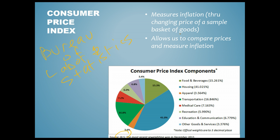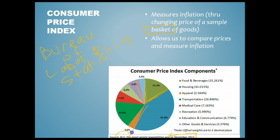The CPI measures inflation through the changing price of a sampled basket of goods. Just imagine you physically have a basket, and the things in it are what the average consumer might buy. The BLS polls Americans on what they buy — the most recent re-weighting was in December 2012. Based on those polls, they determine the components, like food and beverage at 15.261% and housing at around 41%. You individually might not spend those same amounts, but it gives you a yardstick.